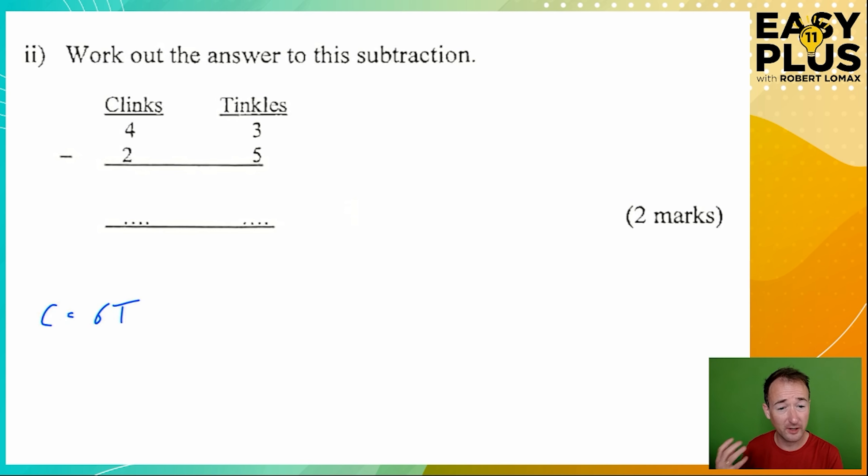Now we could do the subtraction using a column method, but why not simplify things? 4 clinks and 3 tinkles must equal a certain number of tinkles. And we know that there are 6 tinkles in a clink. 4 clinks is 4 lots of 6 tinkles, and there are 3 more tinkles. So we just need to work out 4 times 6 plus 3. So we've got 27 tinkles in this first row. Let's do the same for the second row. And now we just need to subtract 17 tinkles from 27 tinkles.